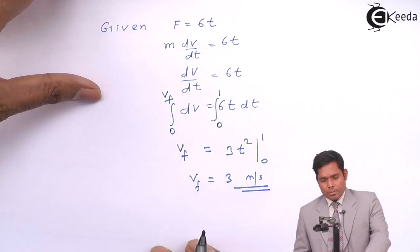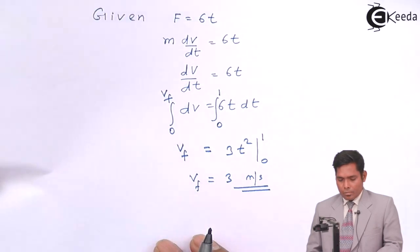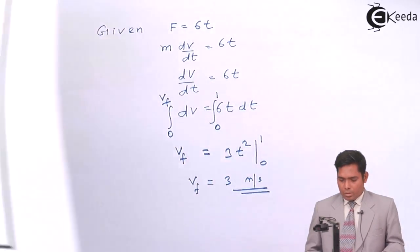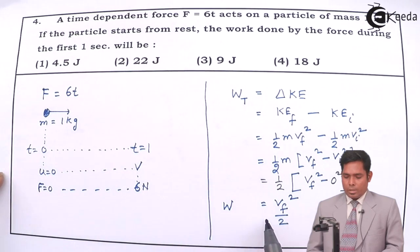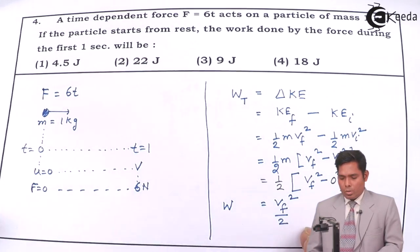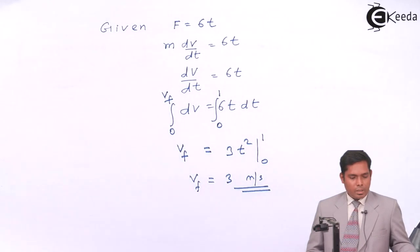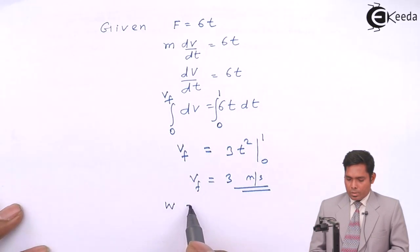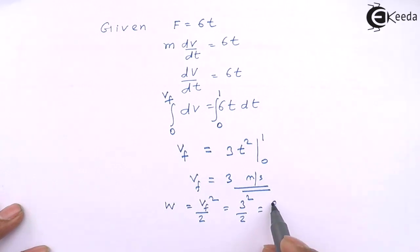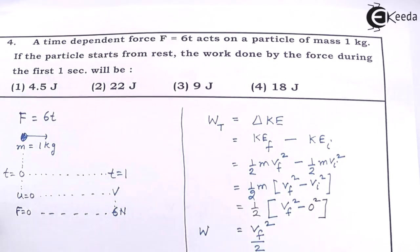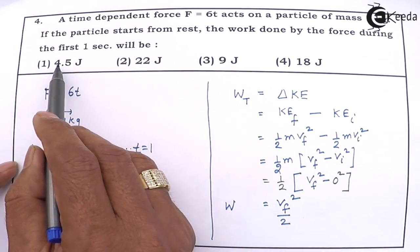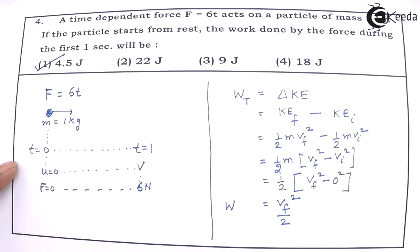If final velocity is 3 m per second, then I can put here in this equation that work done is vf square by 2. So I will write the equation over here that work done is v final square by 2 which is 3 here. So 3 square by 2 which is 9 by 2, which is 4.5 joule. If you see the options, here it is 4.5 joule. So option one is the correct option.